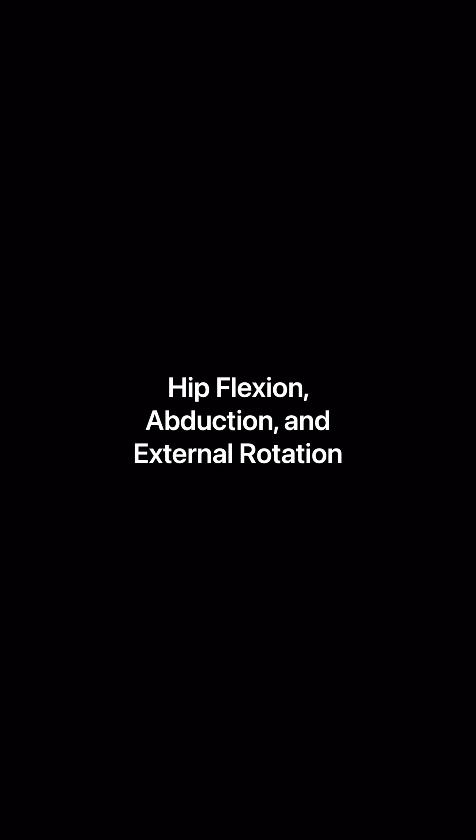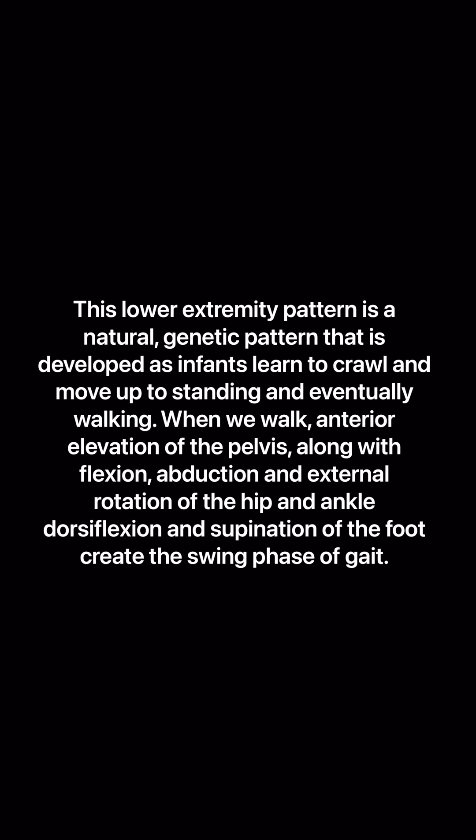Hip flexion, abduction, and external rotation is a natural genetic pattern developed as infants learn to crawl, move to standing, and eventually walk. When we walk, elevation of the pelvis along with flexion, abduction, and external rotation of the hip, ankle dorsiflexion, and supination of the foot create the swing phase of gait.